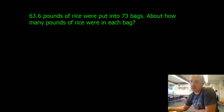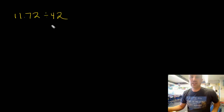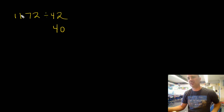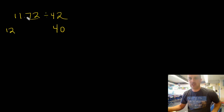One more: 11 and 72 hundredths divided by 42. Round and estimate — same as before. We're not too concerned with exact decimal placement right now, but we'll keep it in mind. 42 rounds to 40. For 11.72, the 4 in 40 is close to 12, so I can round to 12. I'll write that in unit form as 1,200 hundredths to keep track of place value.